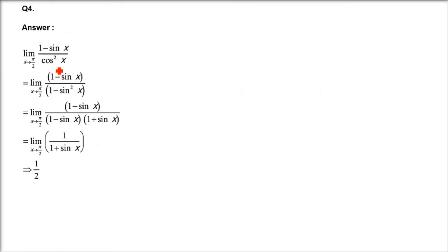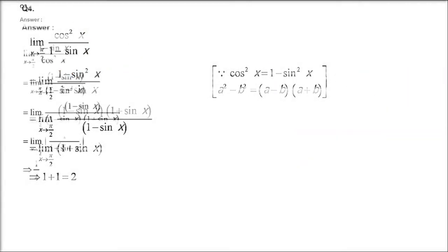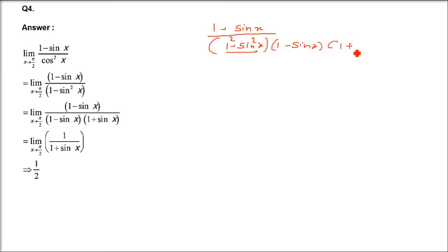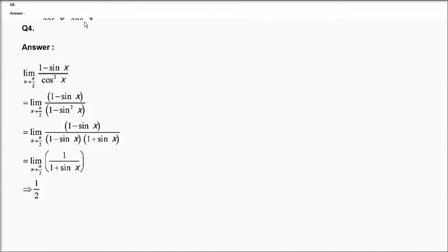Question number 4: (1 minus sin x) divided by cos²x, x tending to π/2. This is the reciprocal of the previous question. cos²x equals 1 minus sin²x, which factors as (1 minus sin x)(1 plus sin x). The (1 minus sin x) in numerator and denominator cancel, leaving 1 divided by (1 plus sin x). Applying x tends to π/2: sin(π/2) = 1, so the answer is 1/(1+1) = 1/2.